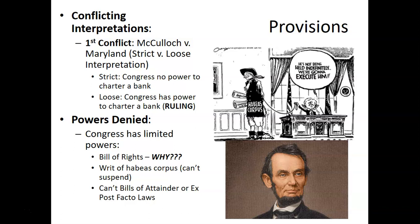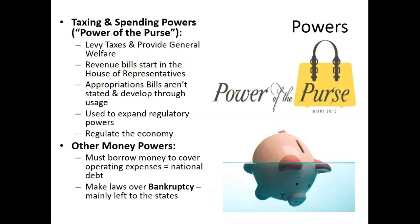Under more specific constitutional powers, the legislative branch has taxing and spending powers, also called the power of the purse. These powers allow congress to regulate the economy in terms of money coming in, providing welfare for the people, and determining where money goes within the government.